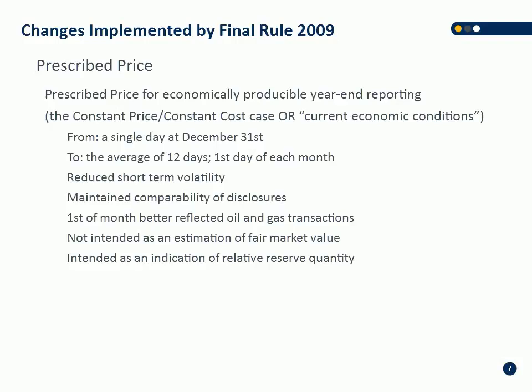It's still not intended as an estimate of fair market value. Unlike NI 51-101, which tries to be a representation of net present value of assets, the SEC has no interest in reflecting fair market value. It's only intended to give a platform for comparison — it's intended as an indication of relative reserve quantity. The SEC is only concerned with comparing the reserves of companies side by side in relative quantities, and there are no resources in the U.S. disclosure framework — reserves only.